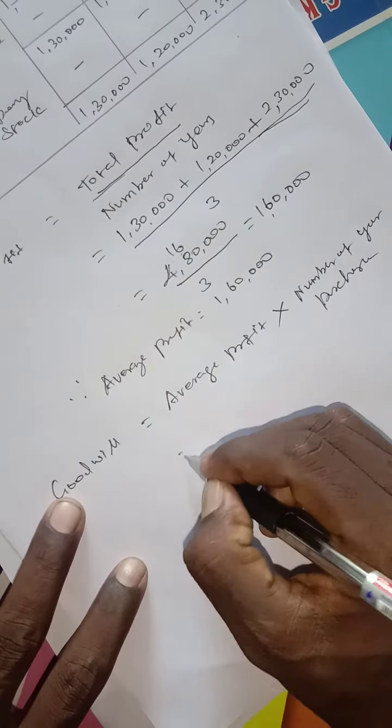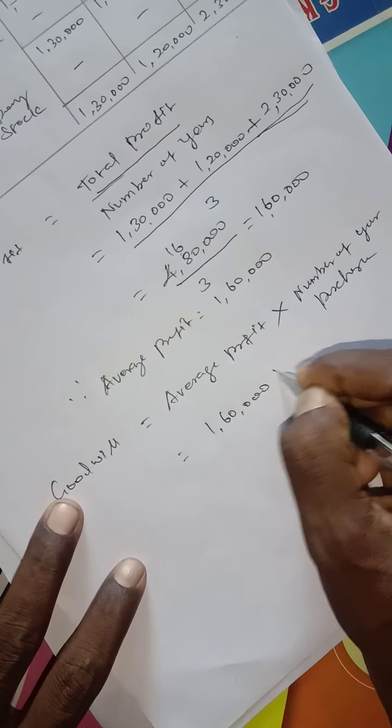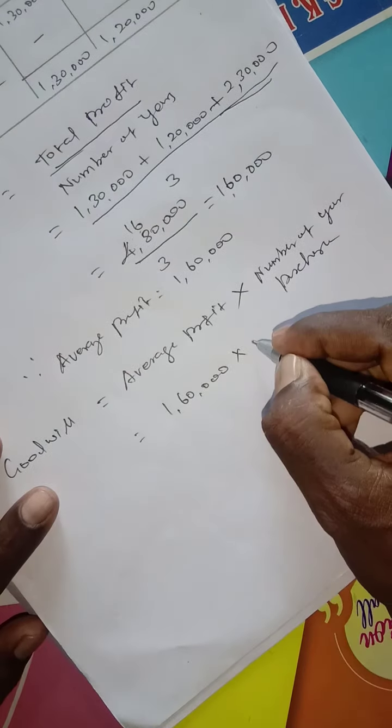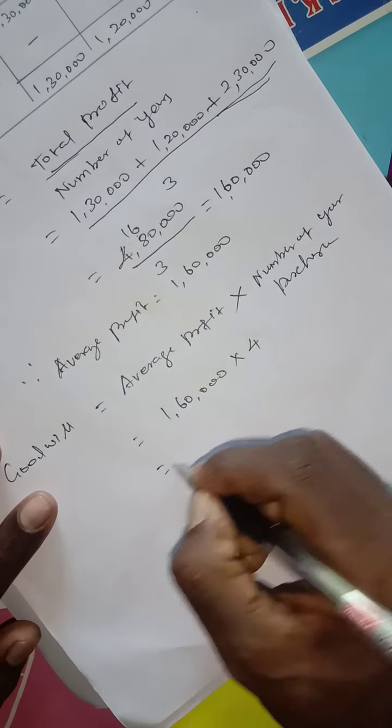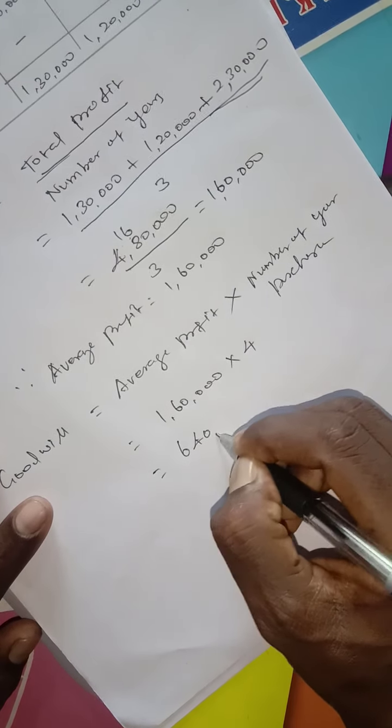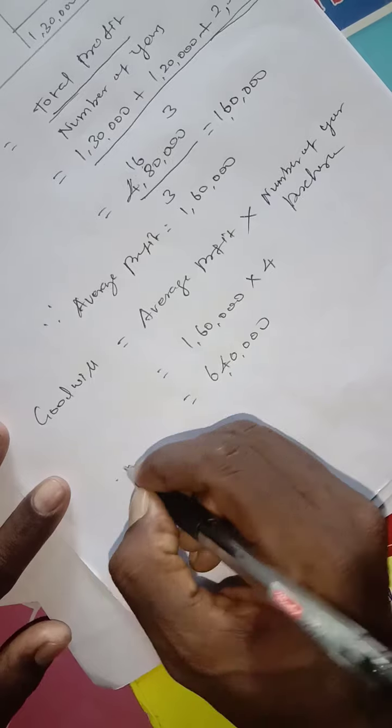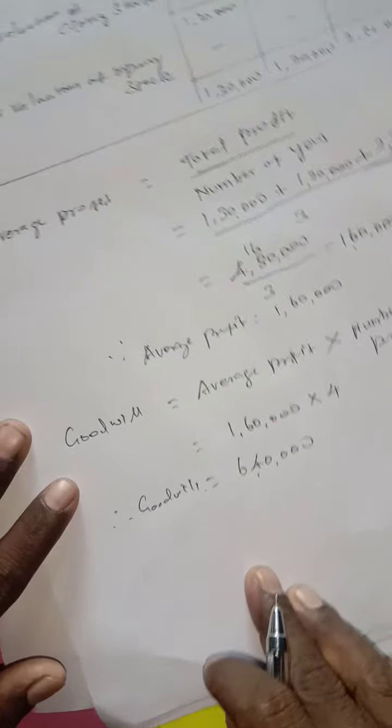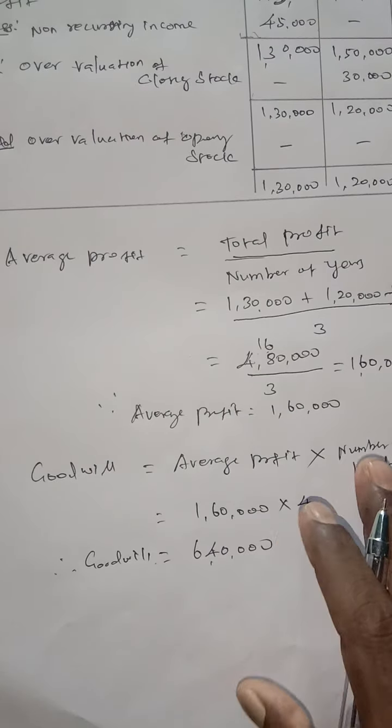₹1,60,000 multiplied by the number of years, which is 4 years. Therefore, goodwill equals ₹6,40,000. Okay, thank you.